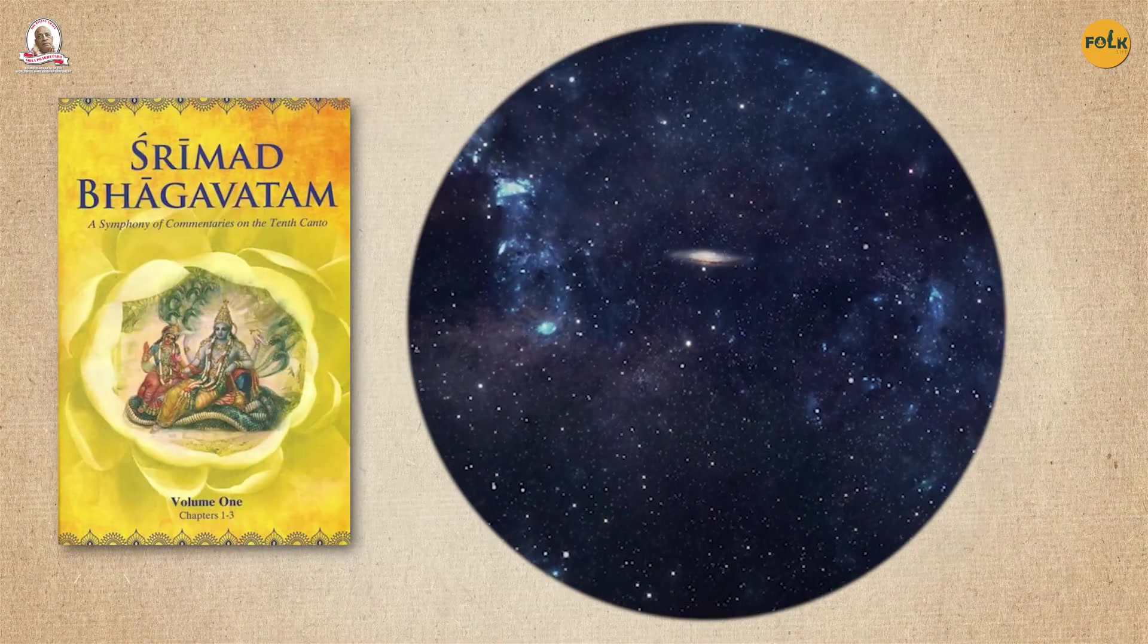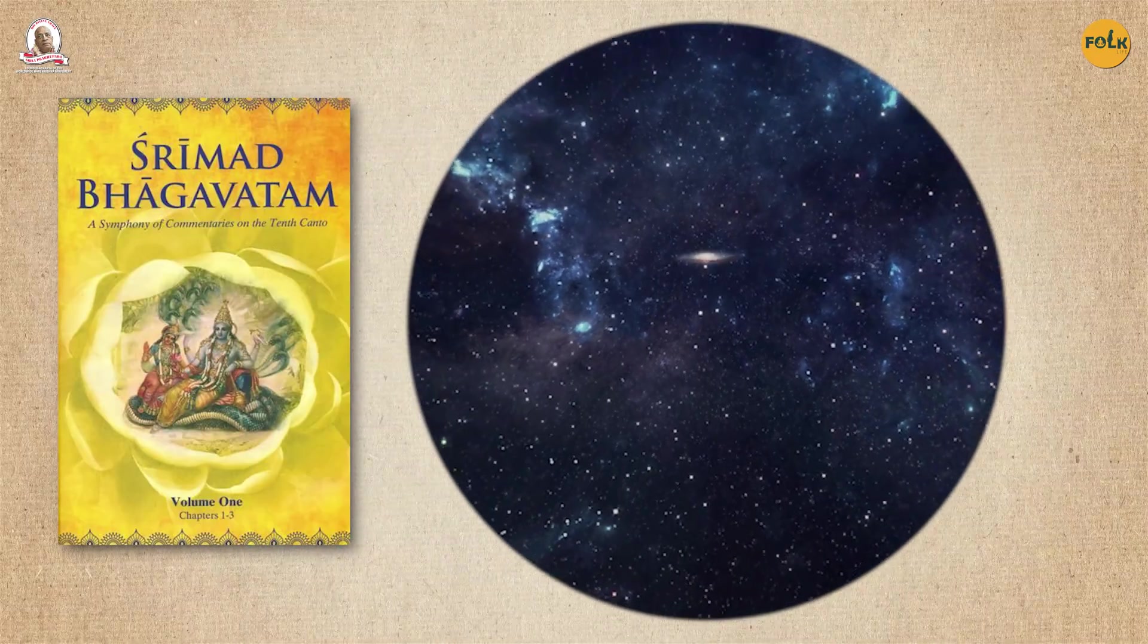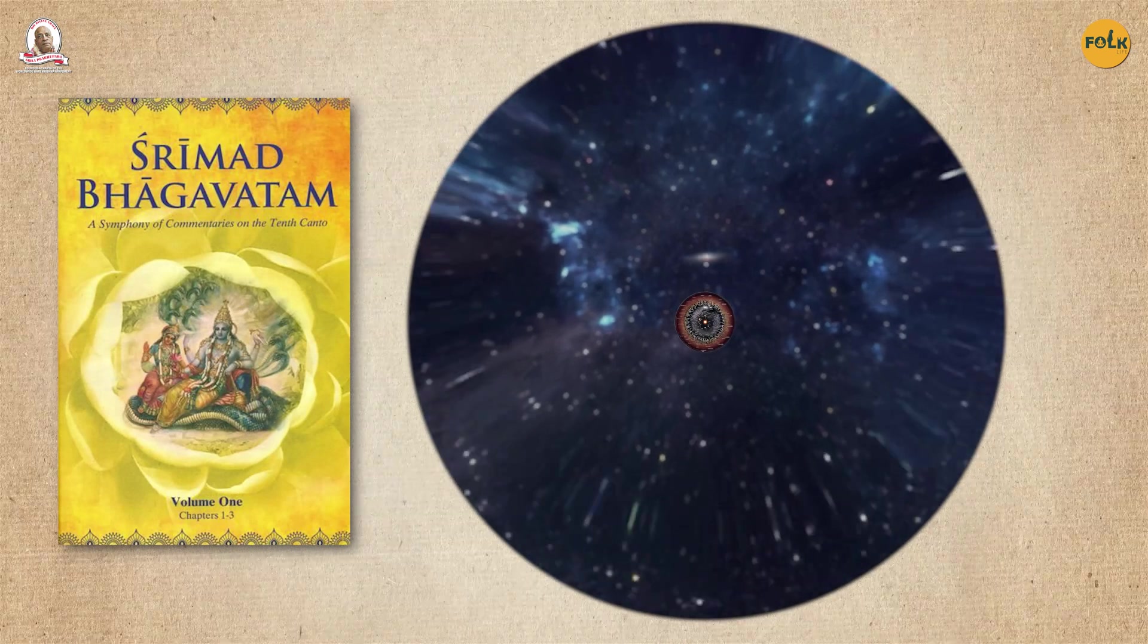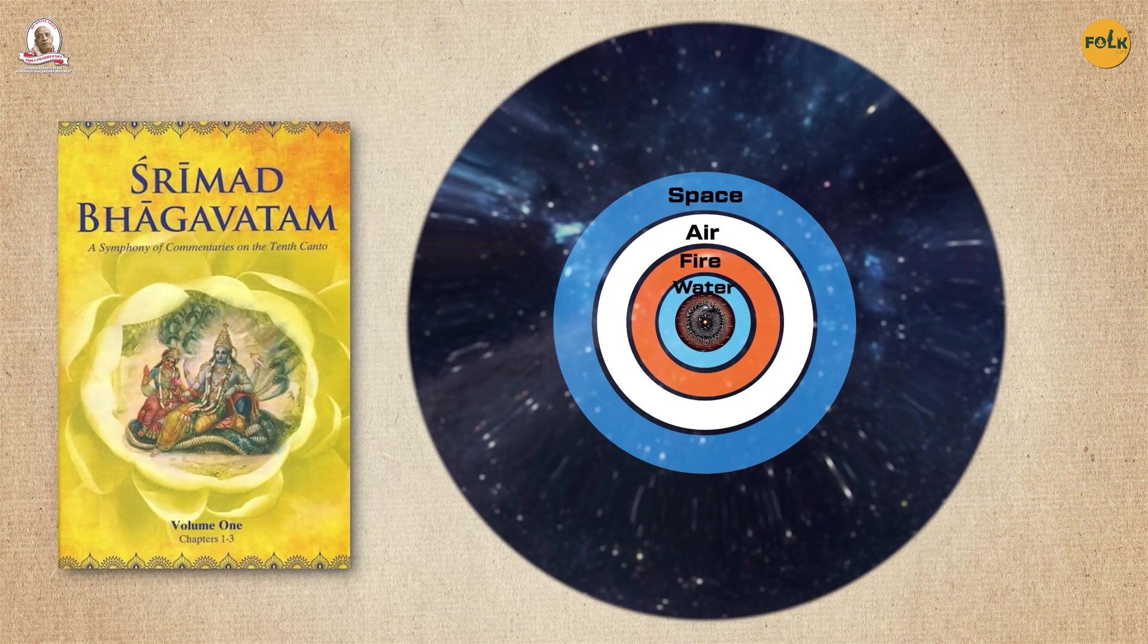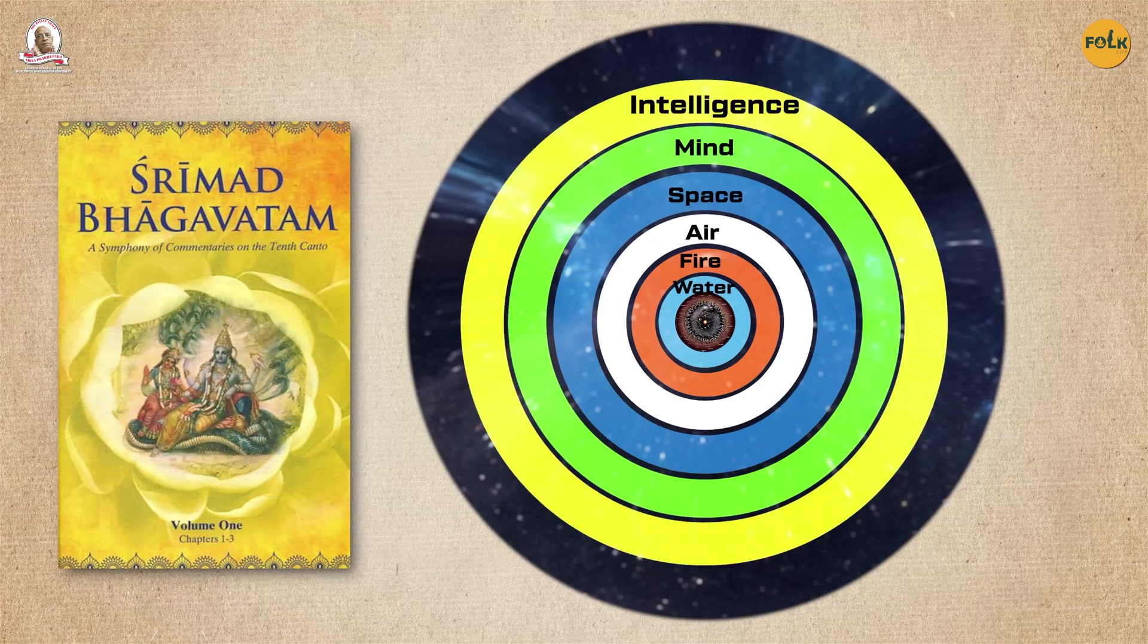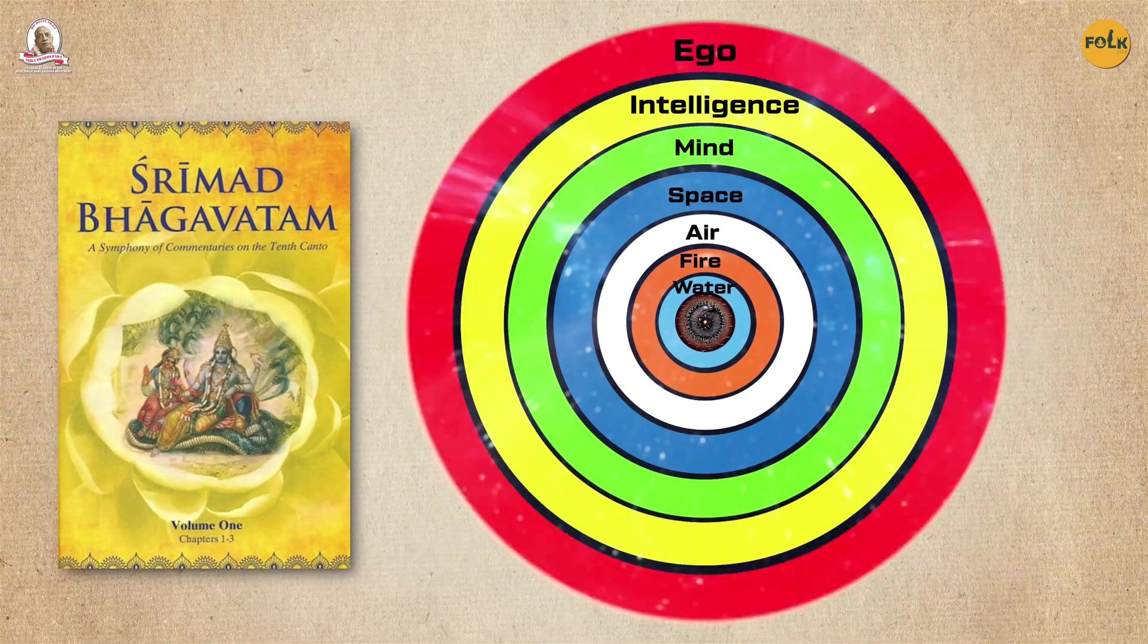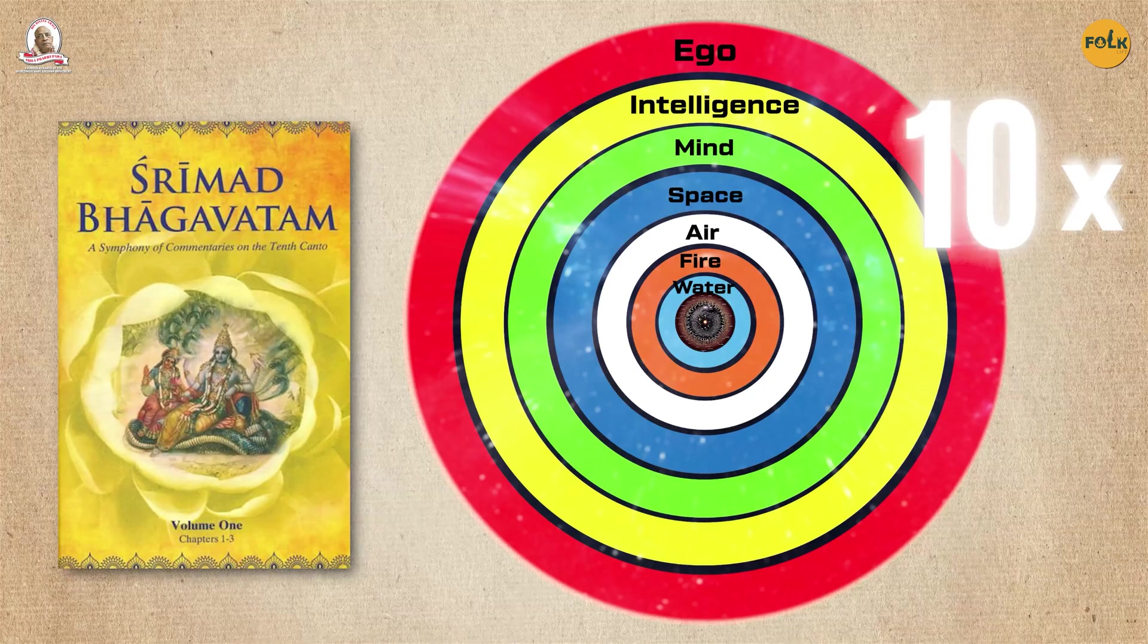According to the Srimad Bhagavatam, this inner part of the universe is surrounded by seven different layers made of seven elements: Water, Fire, Air, Space, Mind, Intelligence, and Ego. And each layer is ten times bigger than the previous one.